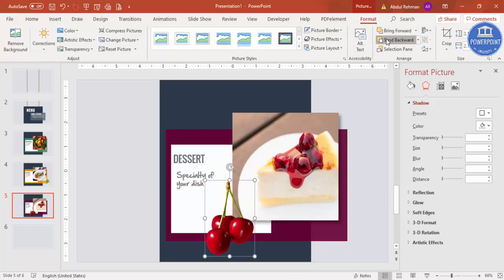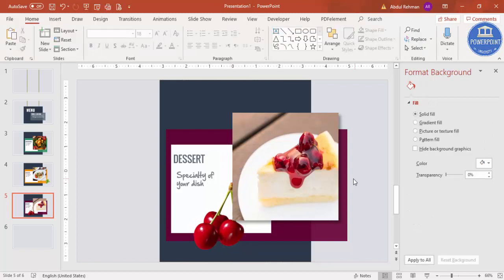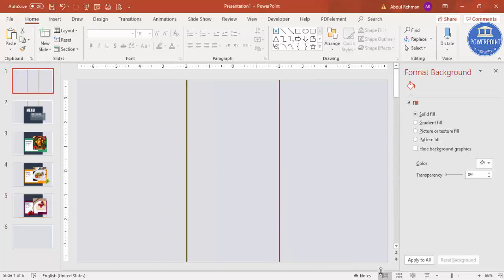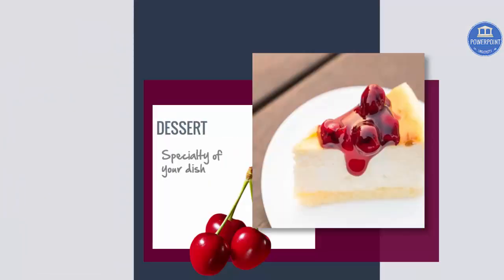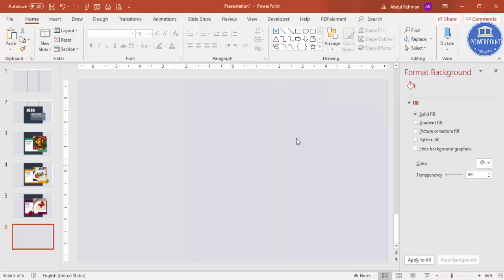You can position the cherry image somewhere and send it to back via Format — send to back. If you want, you can tilt it a little bit so it looks more appealing to customers. You can add as many slides as you like — 10 or 15 — by changing the colors and at the end simply add a thank you message. Once you finalize your design with all the slides, it's time to add the transition effect. If I just run the slideshow without transitions, it doesn't look appealing at all.